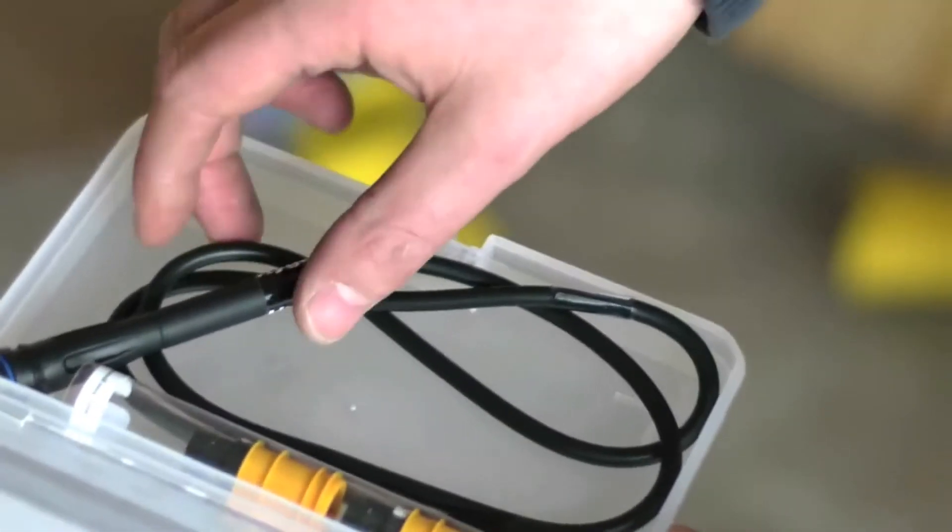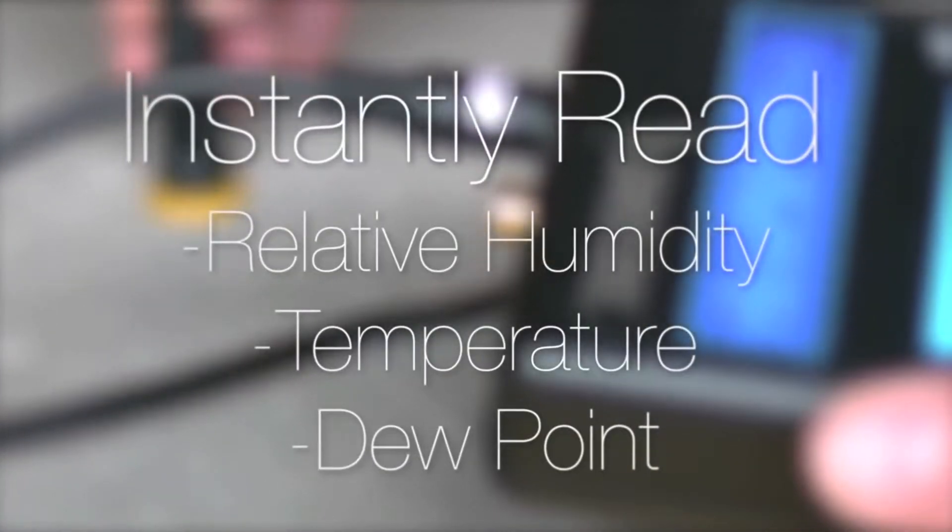When taking readings, plug the interface into the Hygroi probe and instantly read the relative humidity, temperature and dew point simultaneously on the clear display.